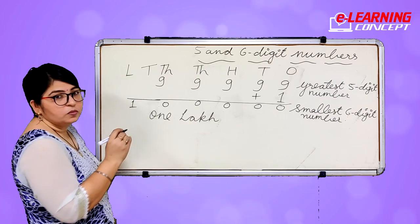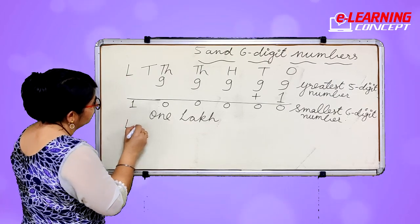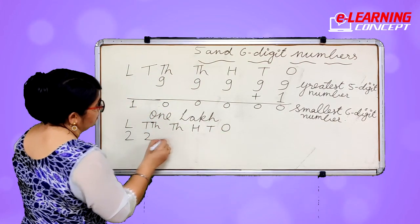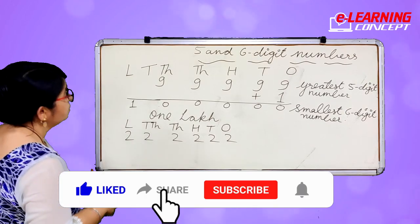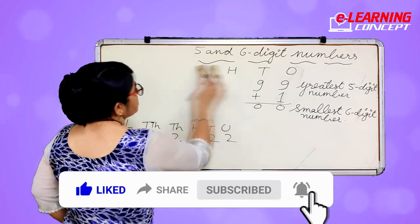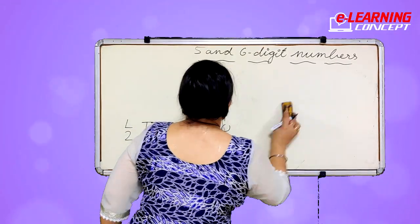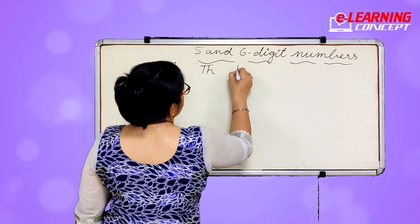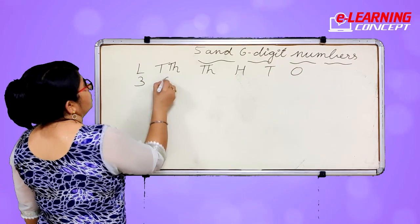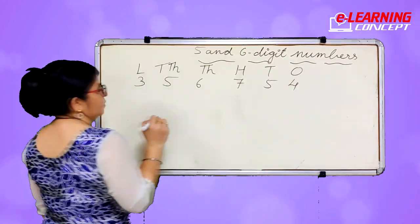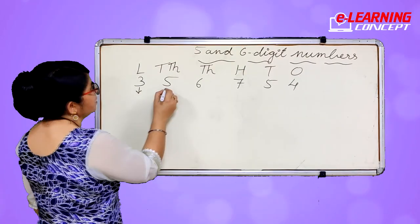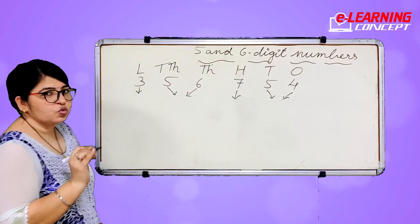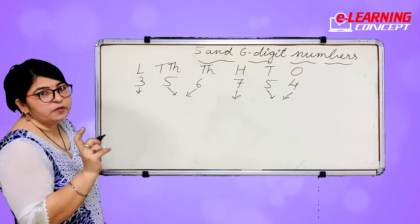Now we will learn how to read six digit numbers. There are four steps to read six digit numbers. The first step comes from lakh, the second step from thousands, the third step from hundreds, and the fourth step comes from tens and ones together.